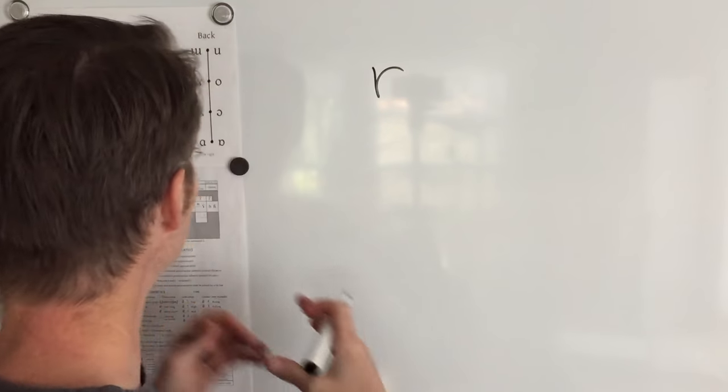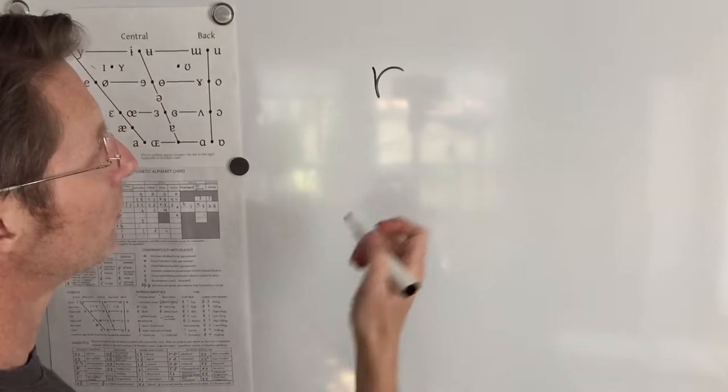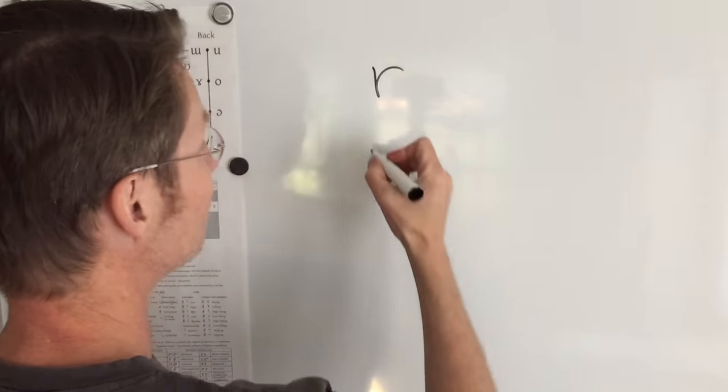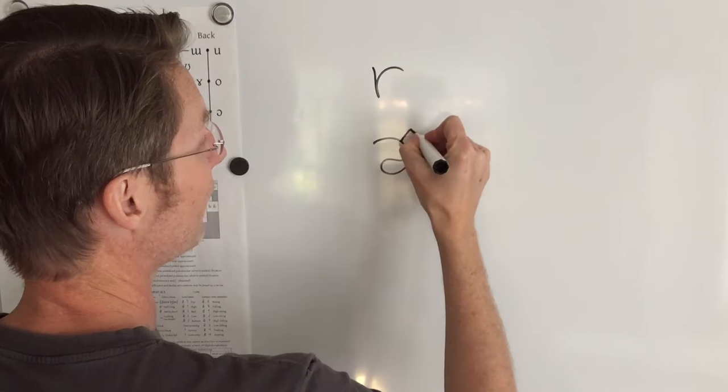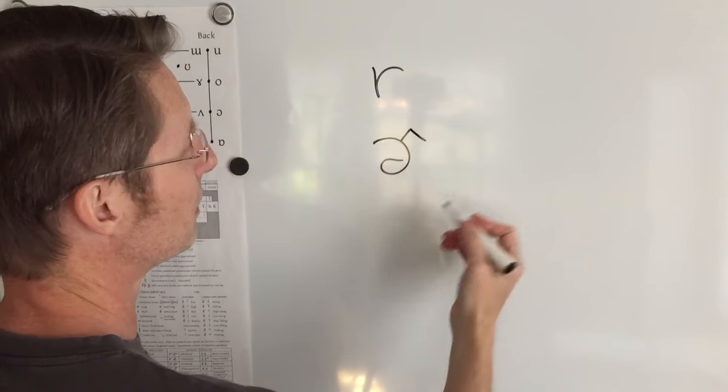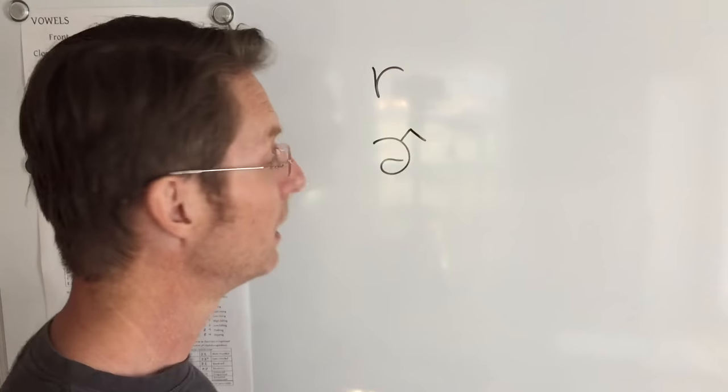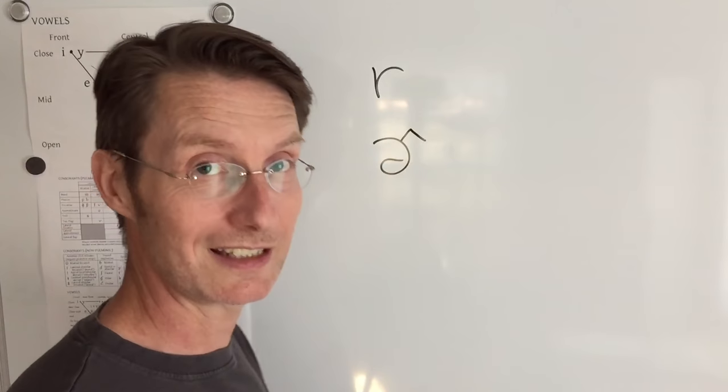Now there's a whole bunch of different R symbols in the phonetic alphabet. The one that we're actually going to focus on is really this little diacritic right there that I'm doing a little bit of a simplified version of, which is called rhoticity.